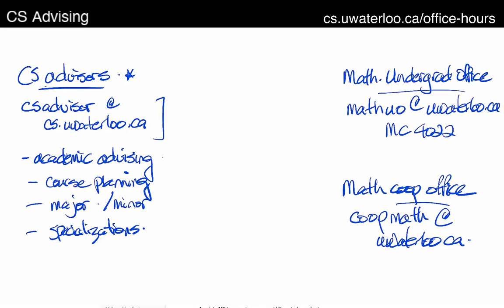We're primarily responsible for academic advising. We do things like course planning — what courses should I take next towards my degree? If you're a CS major student, we're your primary advisors for your program. We can help with admissions into CS courses, questions about specific courses, questions about your program — the BCS program or the BMATH in CS — and if you're interested in specializations like the AI option, data science, or bioinformatics, we're the people to contact. Even if you're not a CS major, if you're taking a minor in computer science, we manage those courses as well.